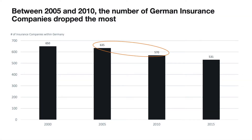'Between 2005 and 2010, the number of German insurance companies dropped the most.' With this action title you focus on the big drop between the years 2005 and 2010.